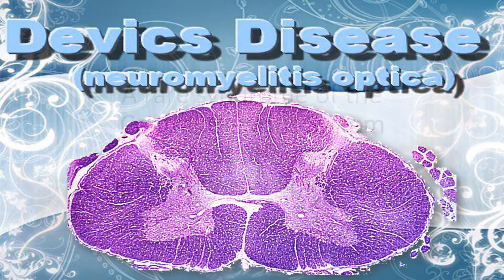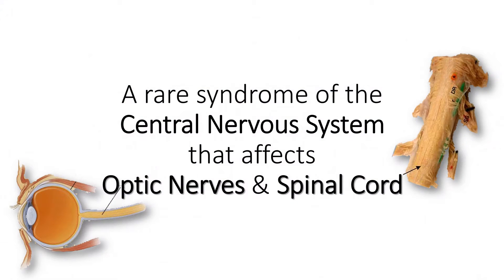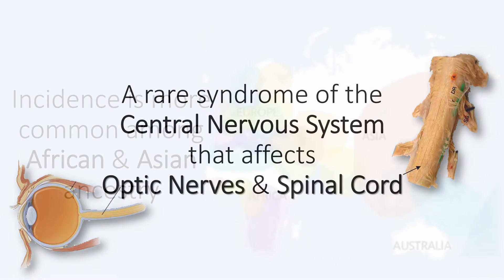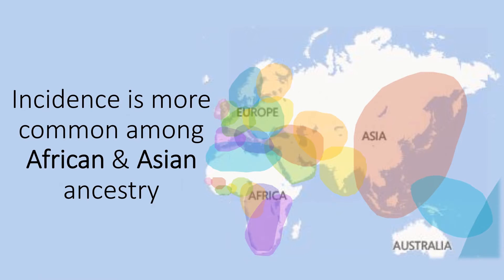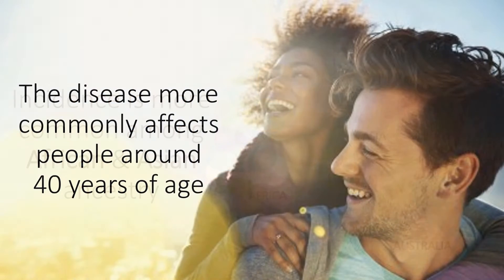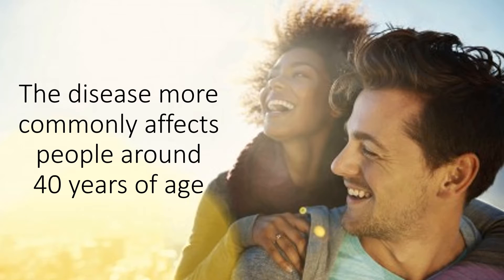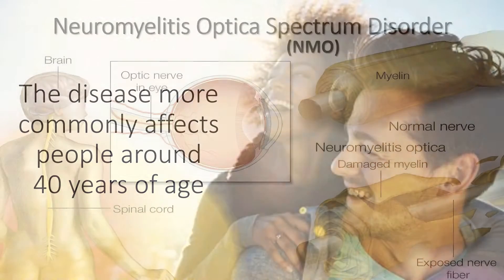Devic's Disease is a rare syndrome of the central nervous system that affects the optic nerves and spinal cord. Incidence is more common among African and Asian ancestry, and the disease more commonly affects people around 40 years of age.